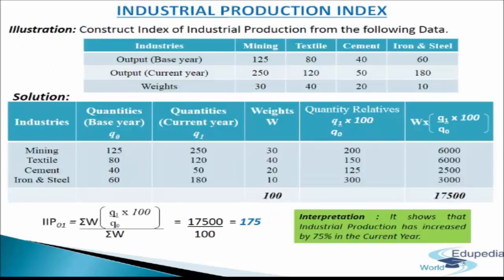Now let us understand the industrial production index number with the help of the following illustration. We have to construct an index of industrial production from the following data. Industries such as mining, textile, cement, iron, and steel are given to us, along with output for the base year, output for the current year, and the weights assigned to them.